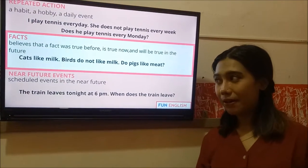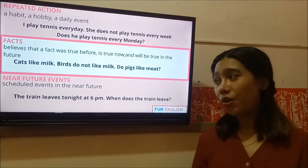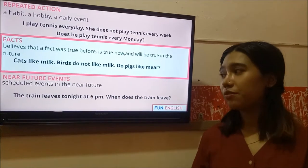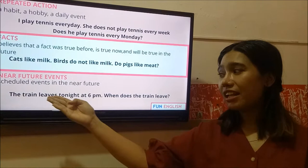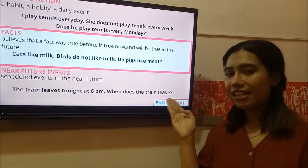And the third one is about near future events. When you have activity or events that has been scheduled in the near future. For example, like, the train leaves tonight at 6 pm. When does the train leave?